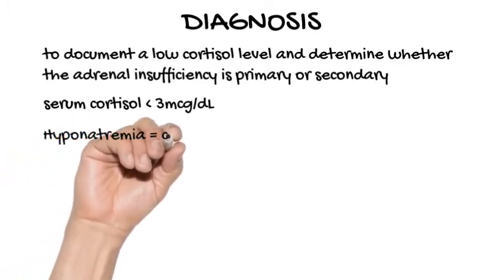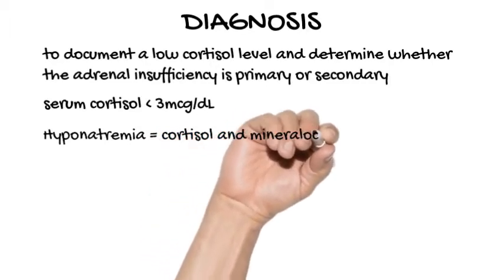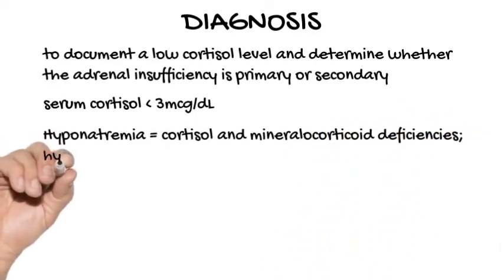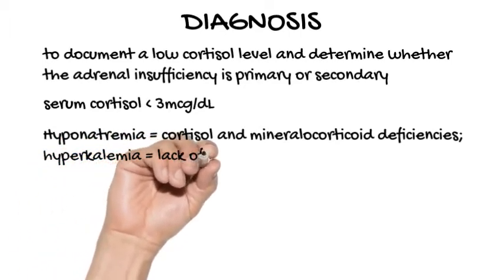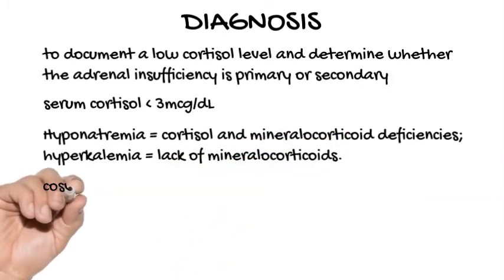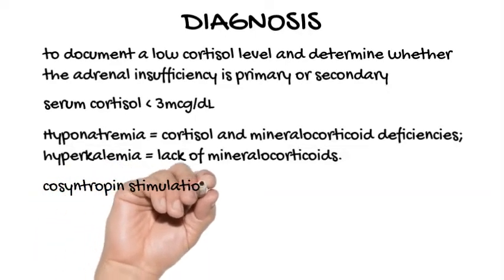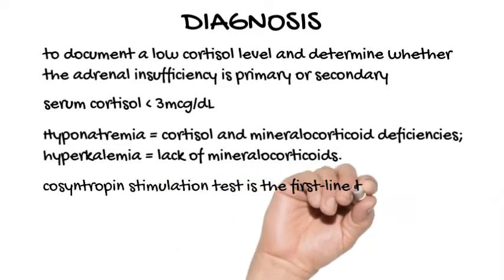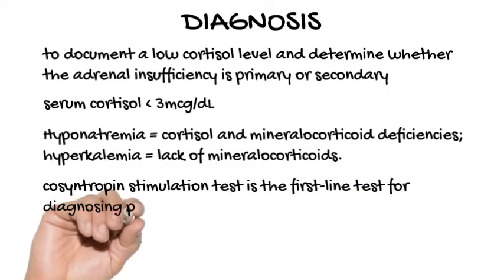A cosyntropin stimulation test is the first-line test for diagnosing primary adrenal insufficiency. The serum cortisol, plasma ACTH, plasma aldosterone, and plasma renin levels should be measured before administering 250 micrograms of ACTH. At 30 and 60 minutes after intravenous ACTH administration, the serum cortisol level should be measured again. A normal response occurs with peak cortisol levels greater than 18 to 20 micrograms per deciliter. A smaller or absent response is diagnostic for adrenal insufficiency.